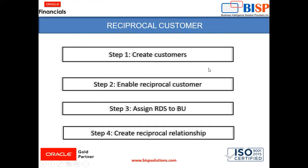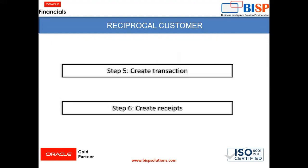Without this relationship, the reciprocal customer concept does not come into effect, so it is important. Then we will create a transaction with one customer and we will book a receipt against this transaction from another customer. So we will move to the instance and see how you can perform the reciprocal customer in the instance.